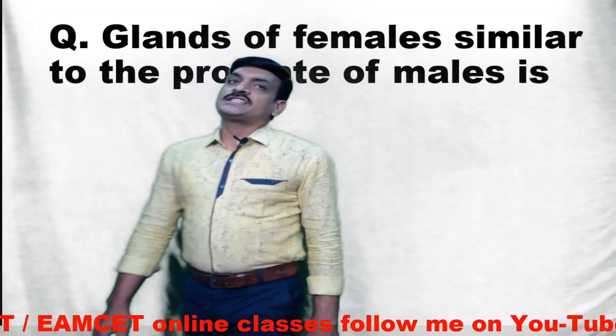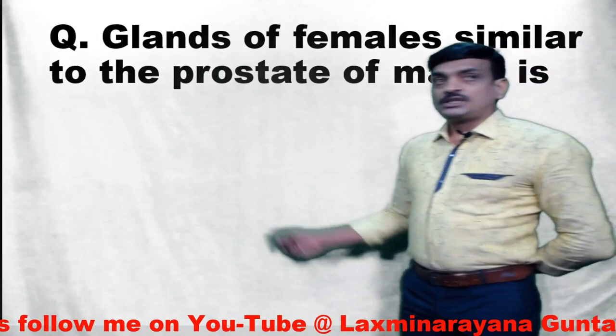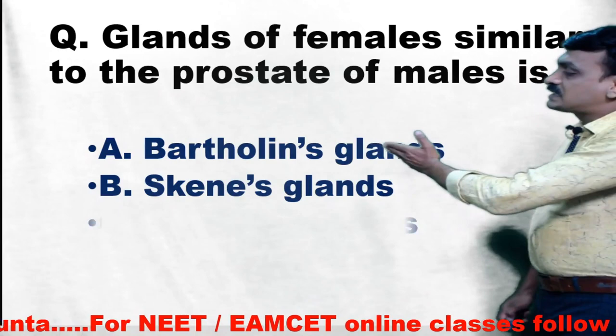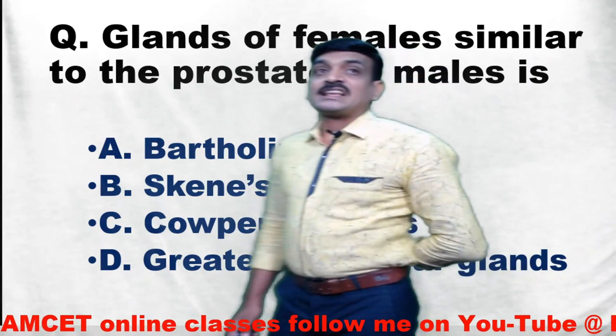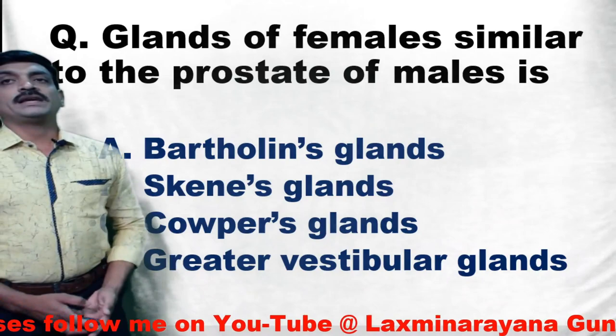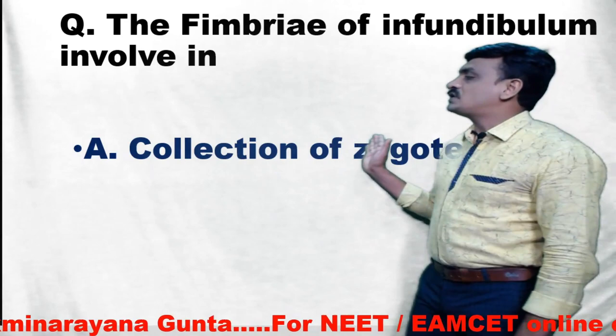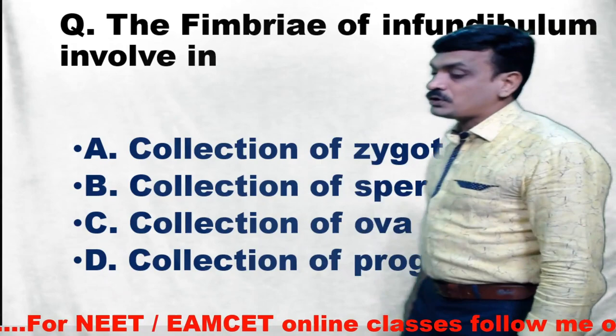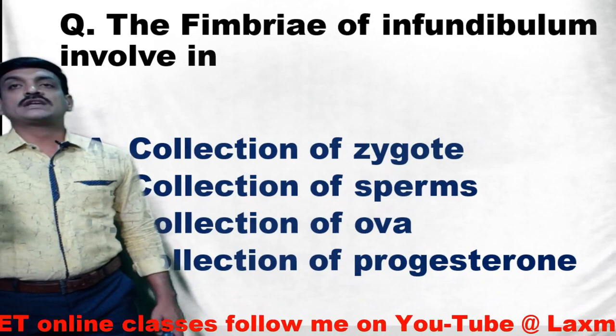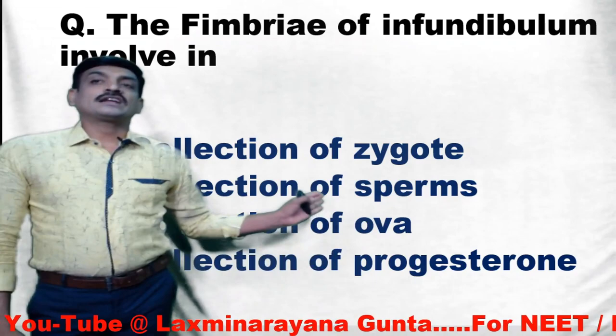Let us finish with a few questions. What are the glands of females similar to the prostate of males? The answer is option B — Skene's glands. Next question: the fimbriae of infundibulum are involved in the collection of — the correct answer is collection of ovum. The fimbriae (finger-like projections at the funnel-shaped structure) are helpful in the collection of ovum.